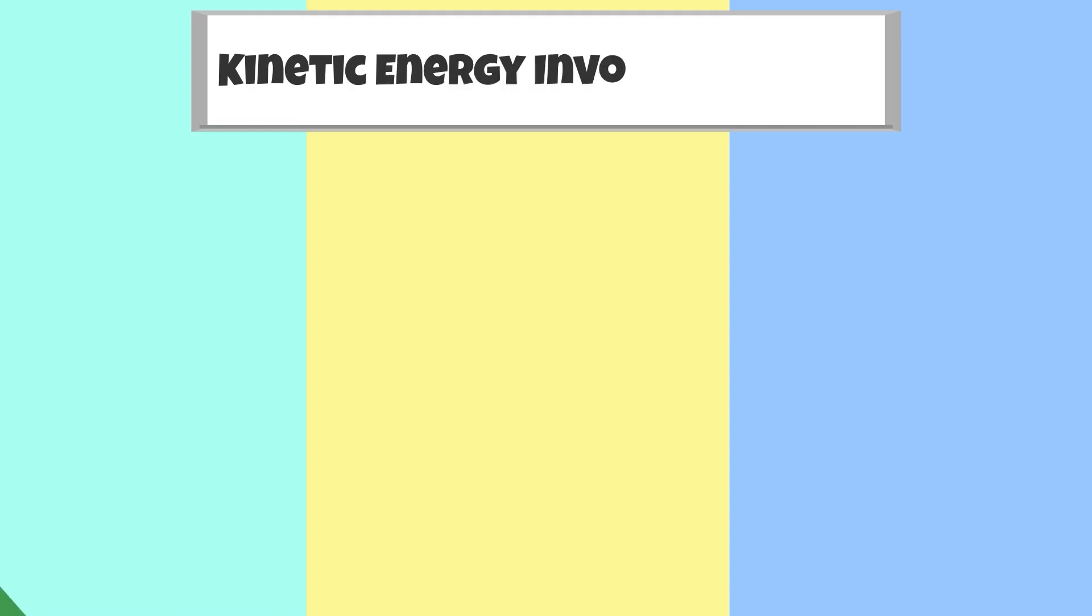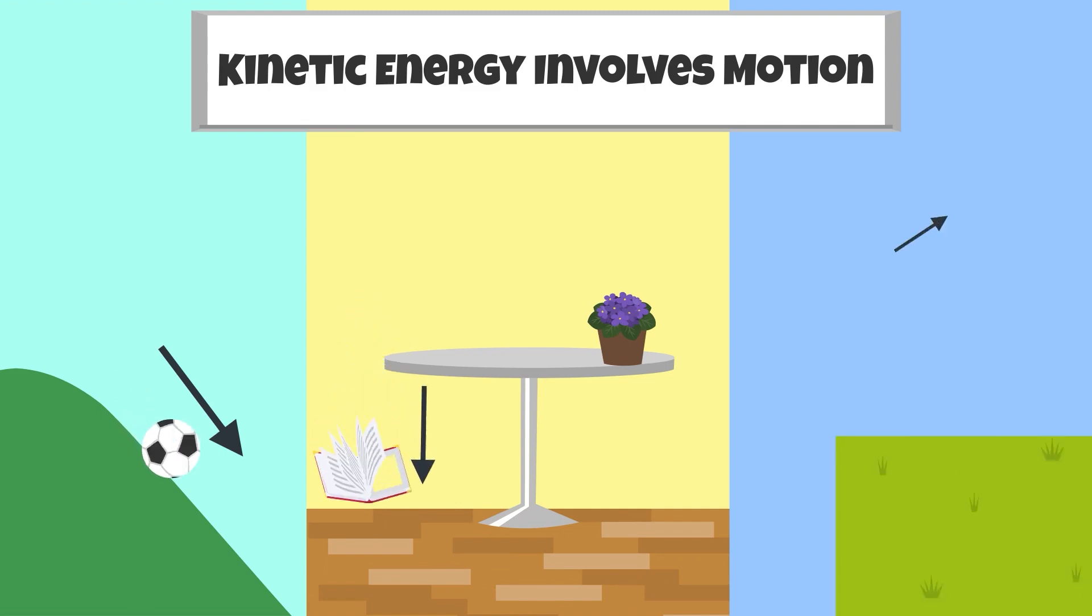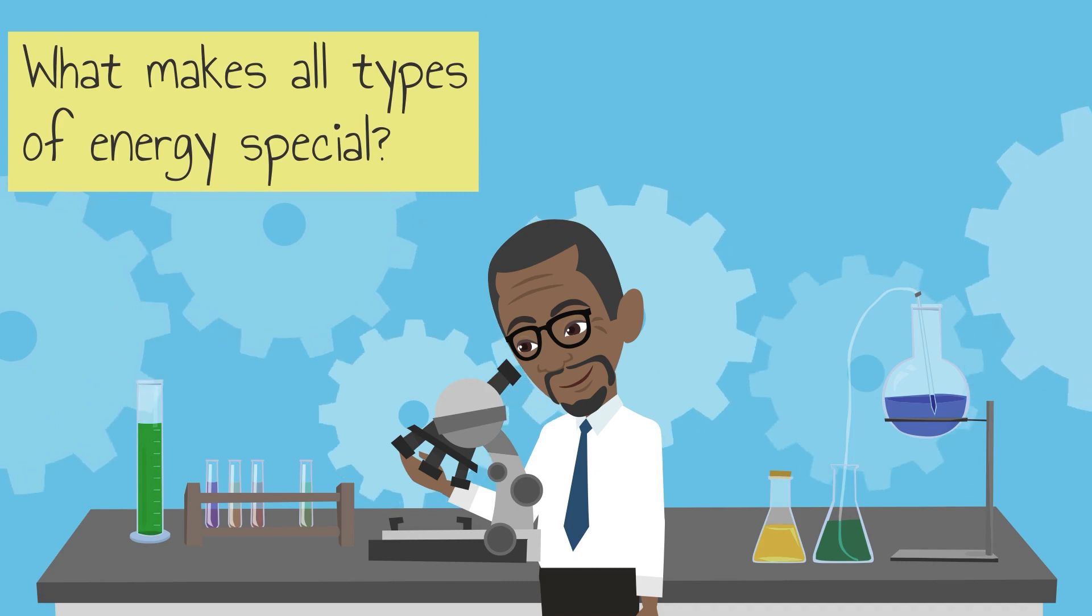Kinetic energy involves motion, such as a ball rolling down a hill, a book falling from a table, or throwing a ball. So what makes all types of energy special?